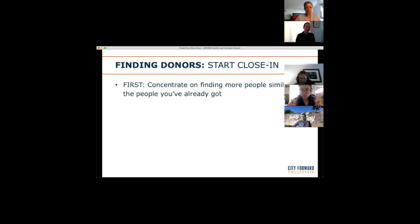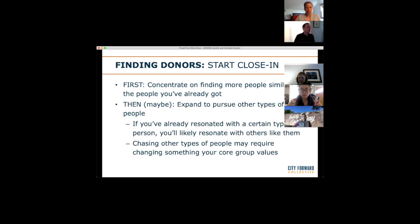Moving on: how do we find these people? The best way to find more people who support your mission is to find more people who are very like the people who already support your mission. Start with finding people who are close to your organization, and people who are like those folks. Once you've got that locked down, you can expand to pursue other types of people. The logic is: if you've already resonated with a certain type of person, it's very likely you'll resonate with others who are like them.